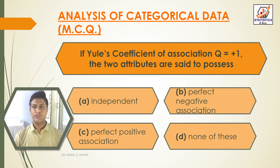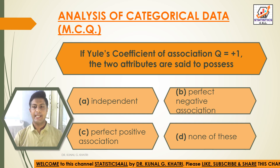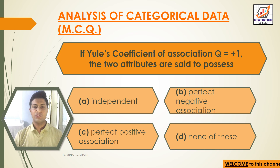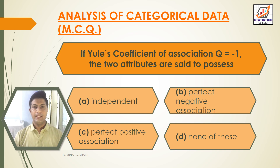Next question: if Yule's coefficient of association Q is equal to +1, the two attributes are said to possess — option A: independent, option B: perfect negative association, option C: perfect positive association, option D: none of these. The answer is option C — perfect positive association. If Q equals +1, the two attributes possess perfect positive association.